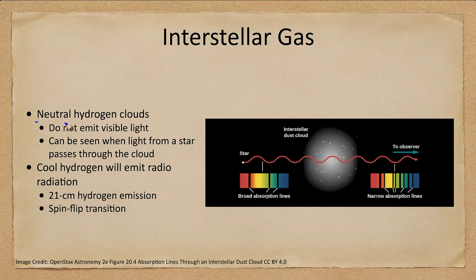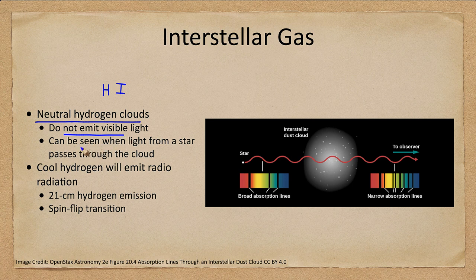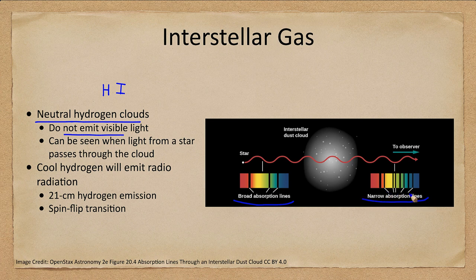Let's look at the neutral hydrogen clouds. These are a lot harder to see and are sometimes called H I — H II for ionized, H I for un-ionized. Neutral hydrogen clouds do not emit visible light; these are too cold. We can see them when the light from a star passes through the cloud and is absorbed by that material. We see the spectrum of the star alone, and then the spectrum of the star with the cloud showing narrow absorption lines from the cloud, which reveals the presence of hydrogen gas between us and the star even if it is not normally visible.